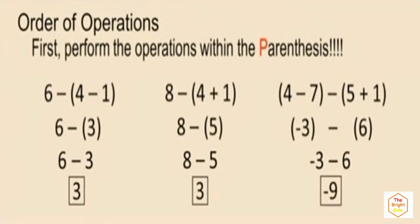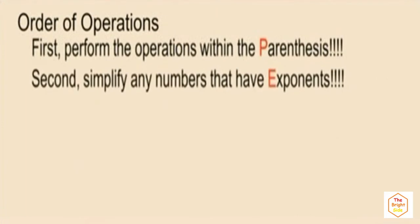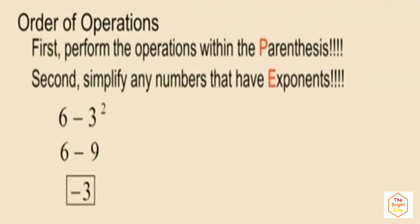Our second category in order of operations is to simplify any numbers that have exponents. Here we have six subtract three squared. We simplify the exponent part first: three squared is three times three, which is nine. Bringing down our work, six subtract nine is negative three.